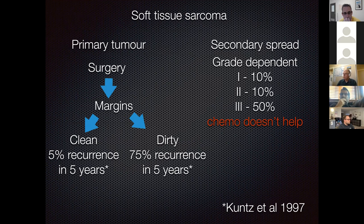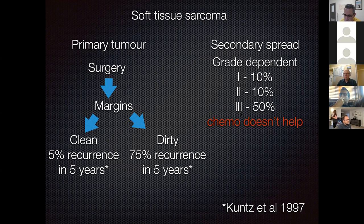With soft tissue sarcomas, we divide the issue into primary tumor control and risk of secondary spread. Secondary spread is grade-dependent: grade one has about 10% metastasis risk, grade two about 10%, grade three about 50%. Importantly, chemotherapy does not prevent metastasis in dogs with soft tissue sarcomas—though in cats with injection site sarcomas it does appear to reduce metastasis risk. For the primary tumor: with clean surgical margins, the risk of local recurrence is about 5% in five years; with dirty margins, the risk is about 75% in five years.